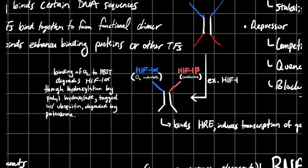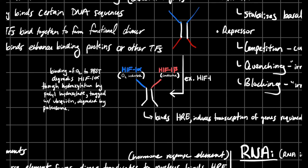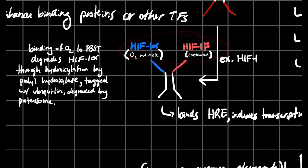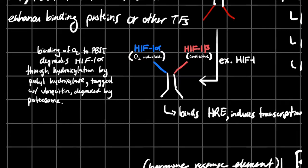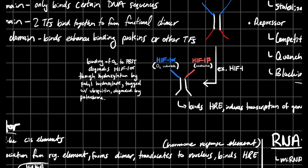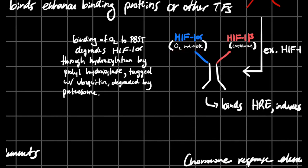Here's an example of a transcription factor: HIF-1, which is hypoxia-induced factor 1. It has two repressor/enhancer domains and forms a heterodimer. HIF-1 alpha is inducible — it can change — while HIF-1 beta is constitutive and always stays the same. When O2 binds to sequences on HIF-1 alpha called ODDD, it degrades the HIF-1 alpha. Oxygen provides for the hydroxylation of those residues by prolyl hydroxylase.